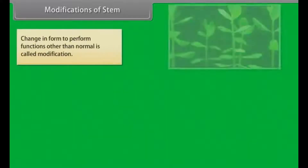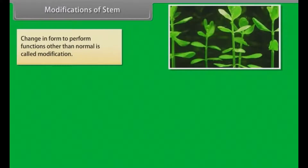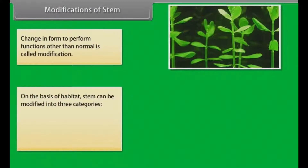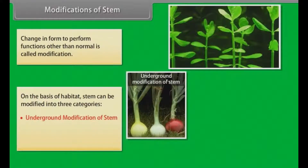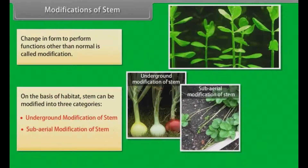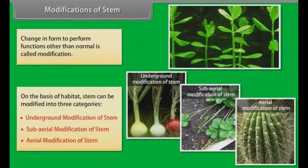Change in form to perform functions other than normal is called modification. On the basis of habitat, stem can be modified into three categories: underground modification of stem, sub-aerial modification of stem, and aerial modification of stem.